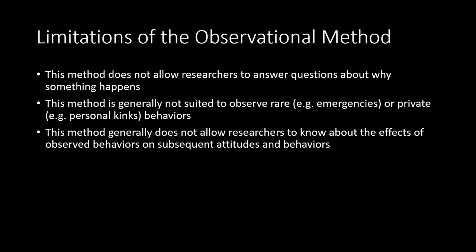There are, however, some limitations with the observational method. One of the primary limitations is that this method does not allow researchers to answer questions about why something happens. For example, think back to when researchers were observing those children's aggressive or altruistic behaviors — it does not allow one to explain why those children are behaving as they are. One might have conjecture as to the reasons, but ultimately this method does not allow us to answer those questions. Further, this method is generally not suited to observe rare events such as emergencies or private behaviors such as one's sexual behavior — you can just imagine how strange it would be if someone was always watching you whenever you were in the privacy of your own home.